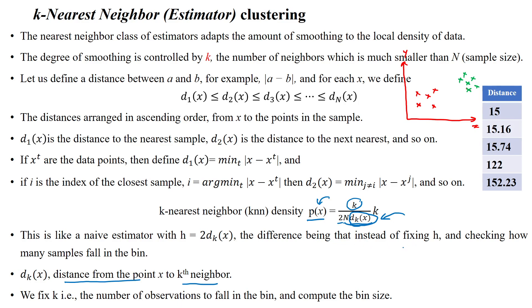Instead of fixing the entire distance term, we can identify how many samples are available in each bin. We fix the number of neighbors k instead of fixing the distance, which allows us to identify which neighbors fall into the bin.